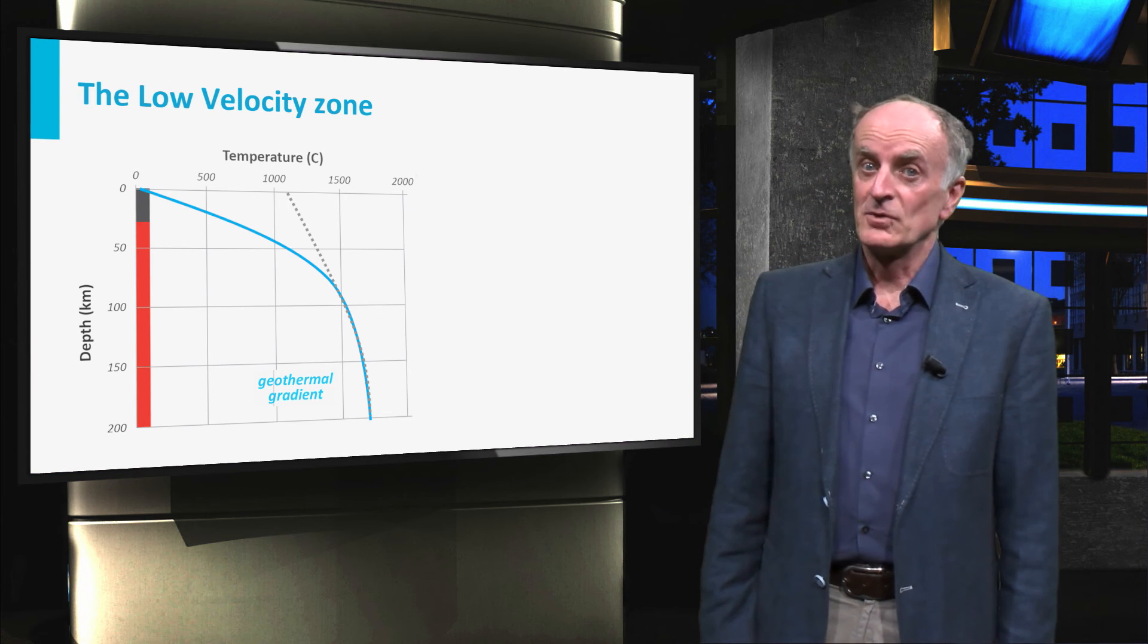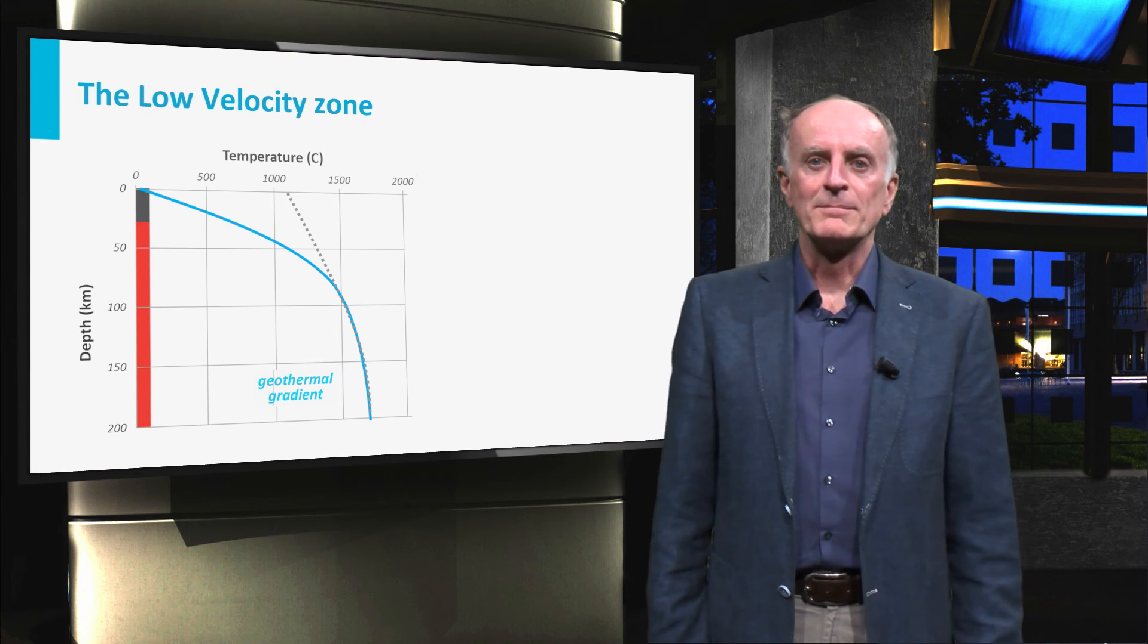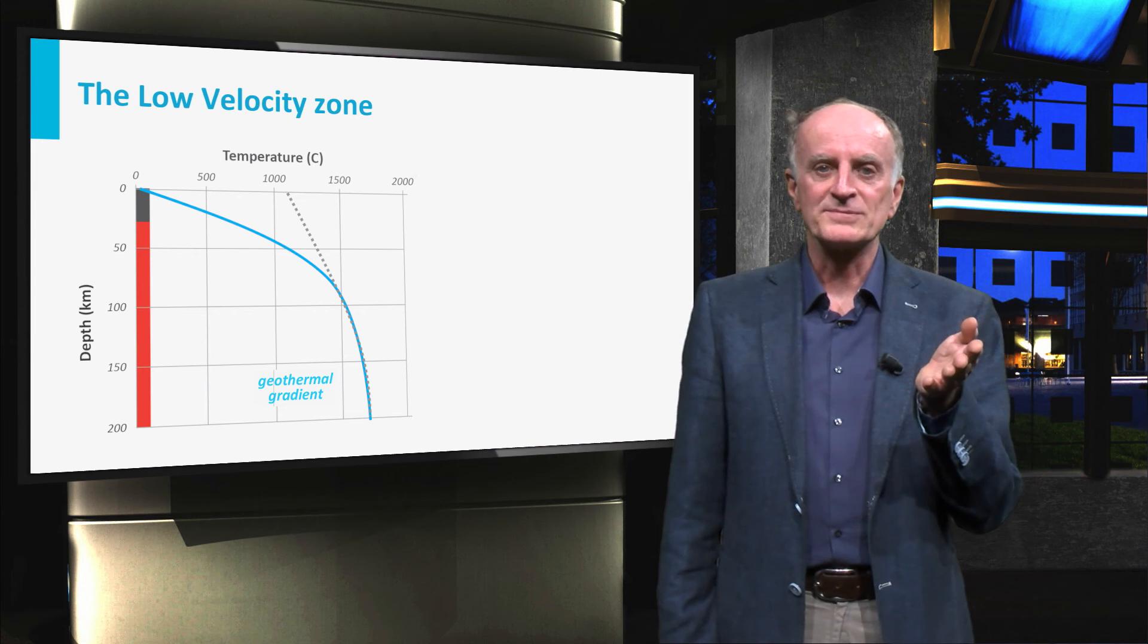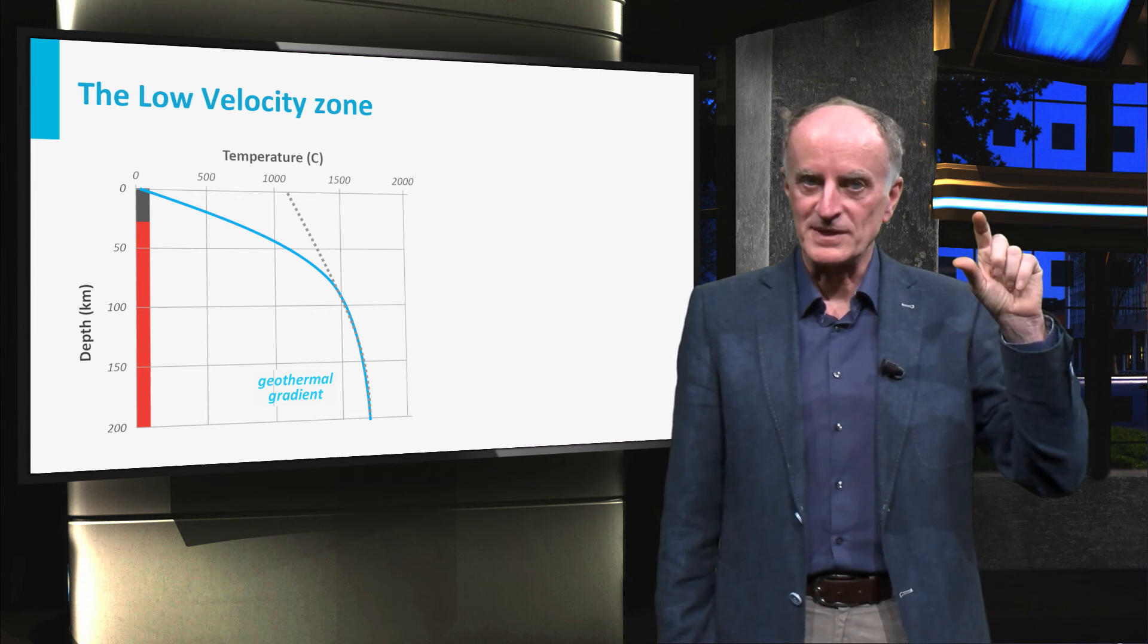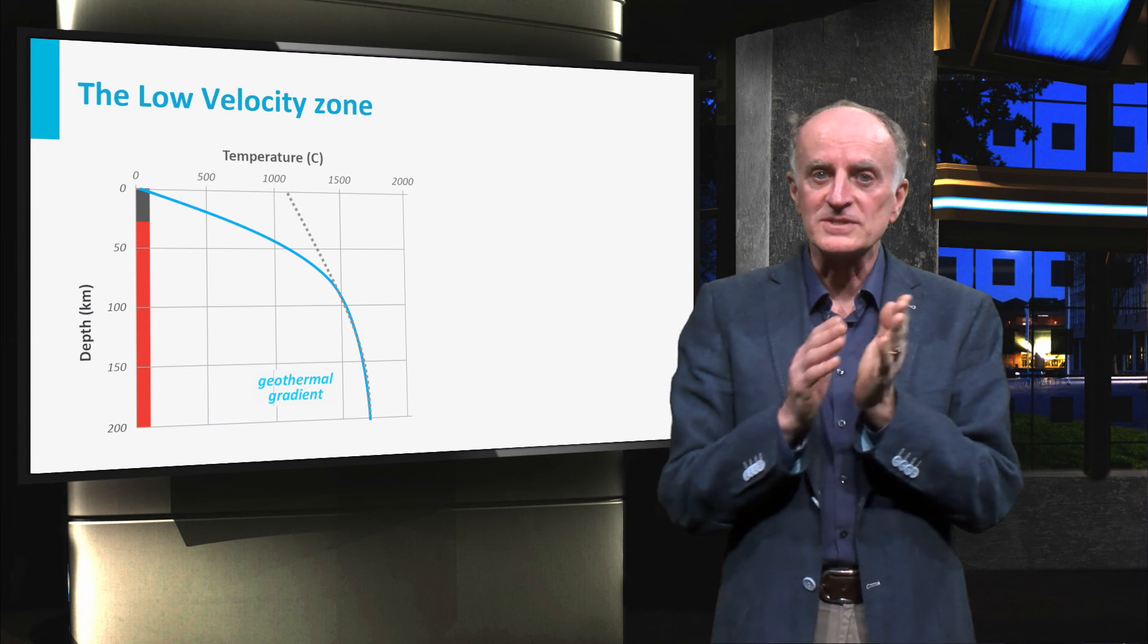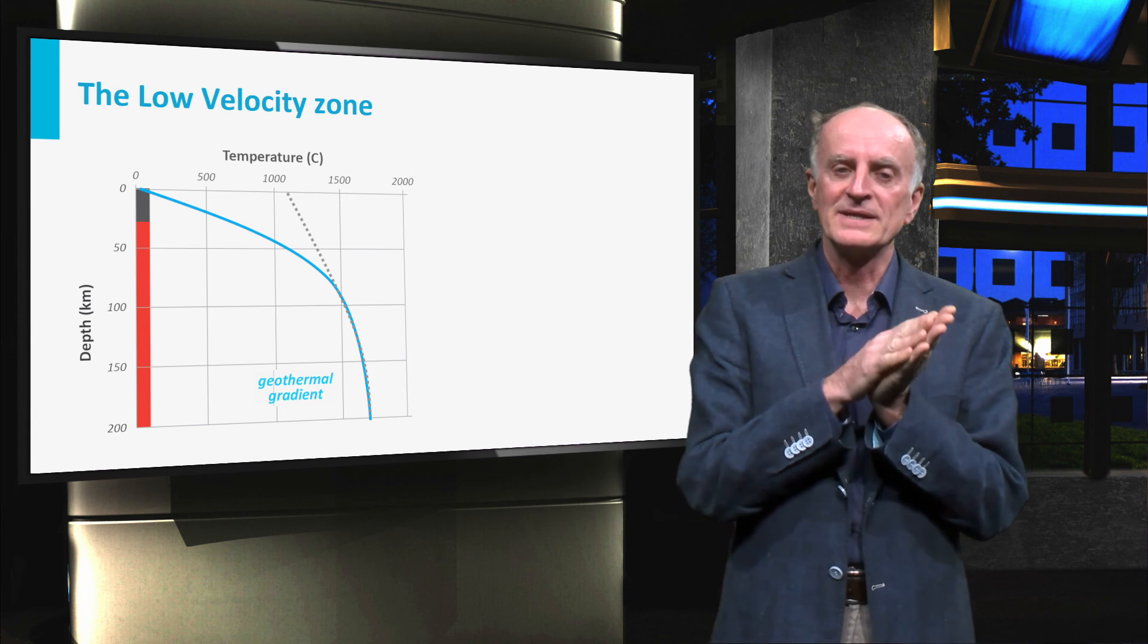The reason for the low velocity zone becomes clear plotting the melting temperature of mantle rocks and the geothermal gradient. In correspondence with the low velocity zones, temperatures are slightly higher than melting temperatures.